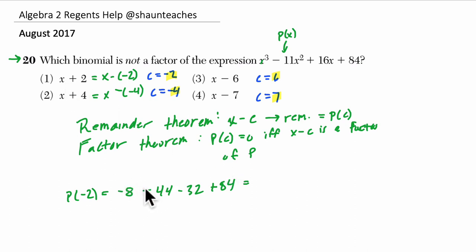Negative 8 minus 44 is negative 52. It's the same thing as negative 44 minus 8, and then minus 32 is negative 84, plus 84 is 0. Wow,